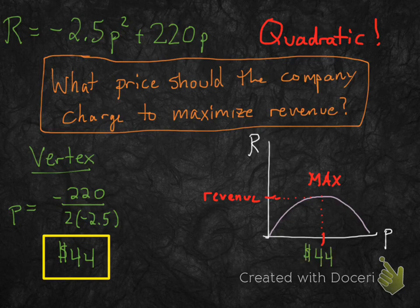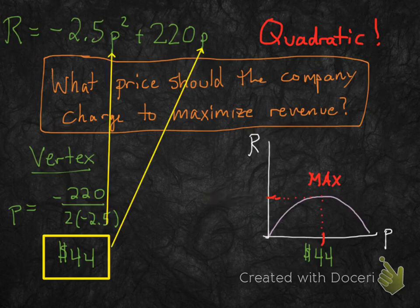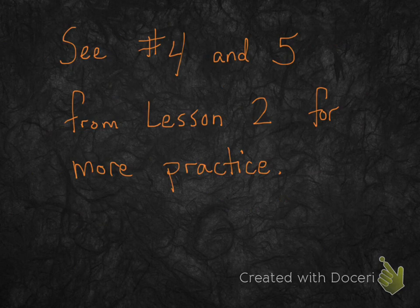That's the price you should charge to get the maximum revenue. If you want to find what that maximum revenue actually is as a number, just plug $44 in for p and your revenue equation gives you the answer. For more practice, see numbers 4 and 5 from lesson 2 — those problems are done in exactly the same way, maybe using profit or revenue. Just read the problem, but the process will be exactly the same.